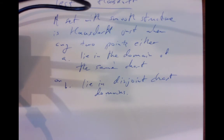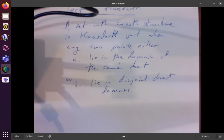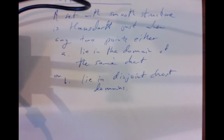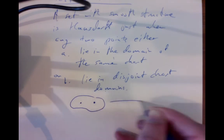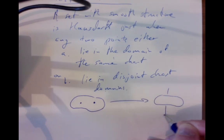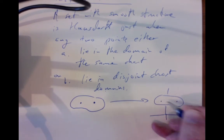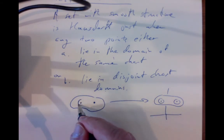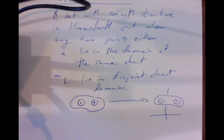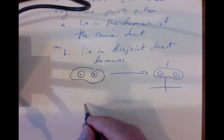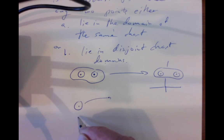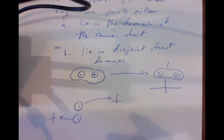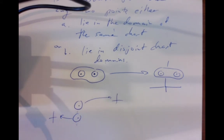If two points lie in the domain of the same chart, that chart maps them into Euclidean space. Because Euclidean space is Hausdorff, we can separate them there, and then simply copy that back to our set with smooth structure to separate them. If instead they lie in disjoint chart domains, then they're already separated — the disjoint domains are open sets separating them. That's how the proof works. The converse is easy enough to prove as well. So that's our test for being Hausdorff.